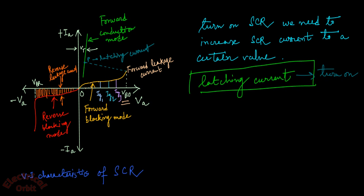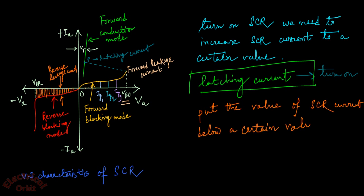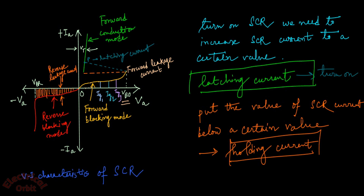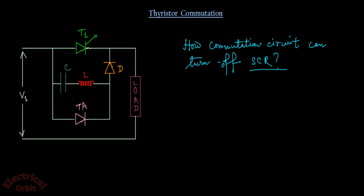Now when you want to turn off the thyristor, you have to reduce the value of SCR current below a certain value, and that is called holding current. This is the point of holding current — I am giving it the name H. So you have to reduce SCR current below the H point, or below the holding current.